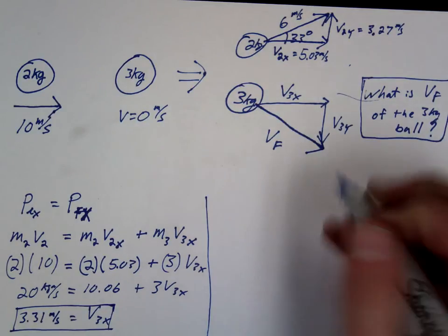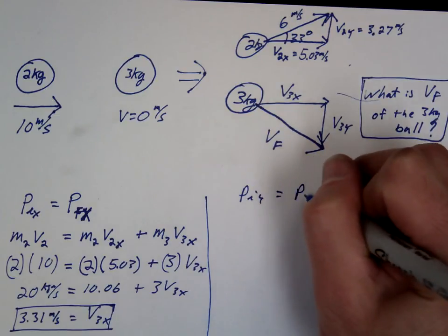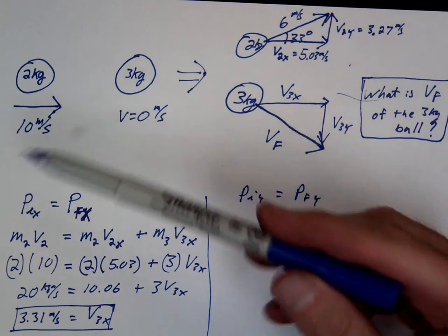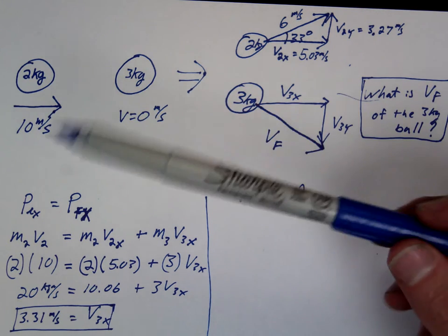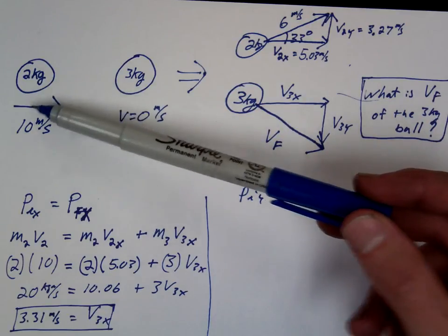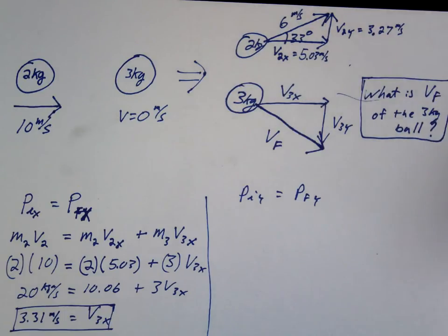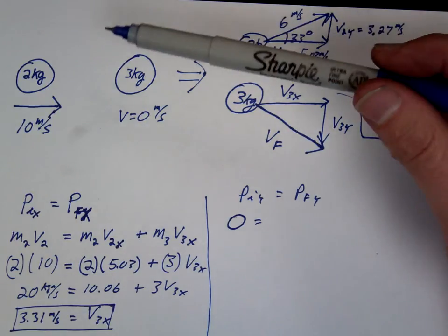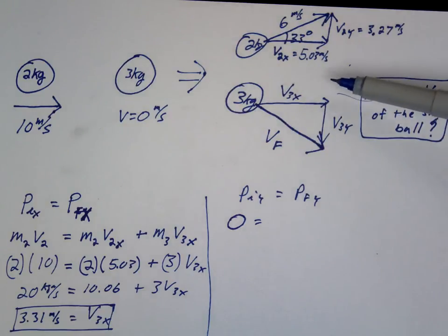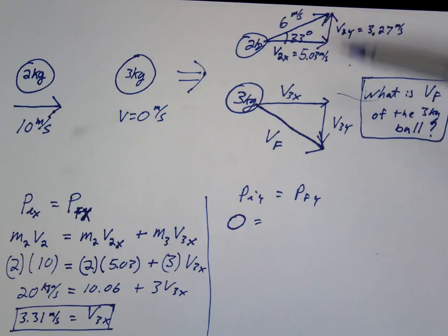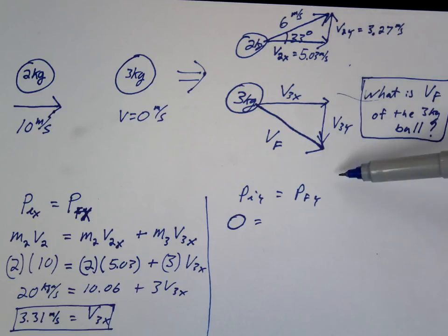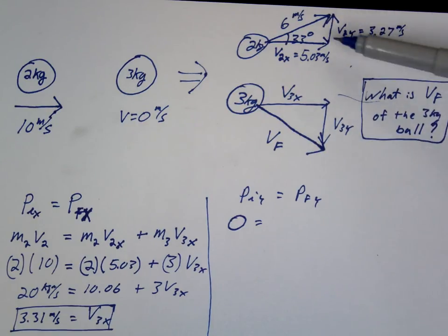Let's do the y side. P-initial y should equal P-final y. Now which of these two have a y-momentum? Does this one have a y-momentum? No. Does this one have any momentum? No. So what's the initial vertical momentum? Zero. How can we start with an initial momentum of zero and end with zero if both of these are moving vertically? One's moving up and one's moving down. So what should be true about the two vertical momentums? They should be equal — they're going to cancel out.